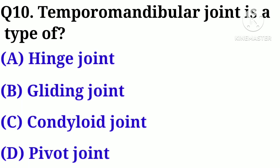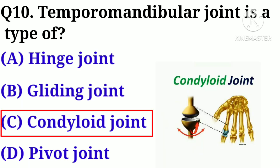Q10. The temporomandibular joint is a type of: A. Hinge joint, B. Gliding joint, C. Condyloid joint, D. Pivot joint. Answer: C. Condyloid joint.